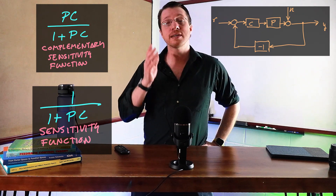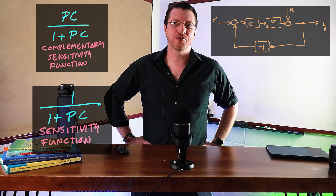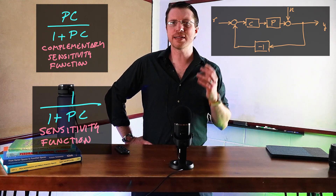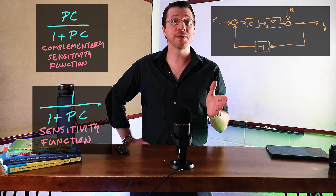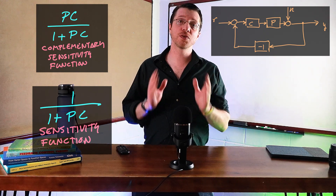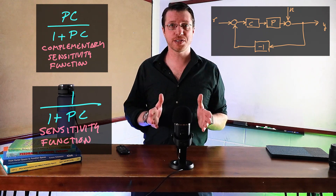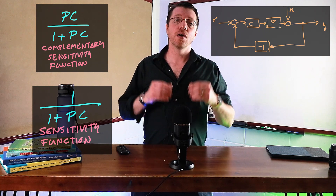And the other one is the complementary sensitivity transfer function. Note that they are complementary and that their sum is always 1, and that means that you can't get them both to be small at the same time. Now, since we look at the Bode plots on a log scale, we would ideally like the magnitude of the log of the sensitivity function to be negative, since it'd be nice that the response to disturbance is smaller in magnitude than the original disturbance itself.